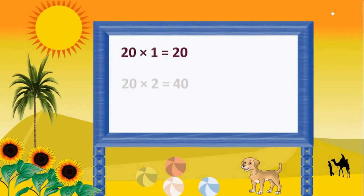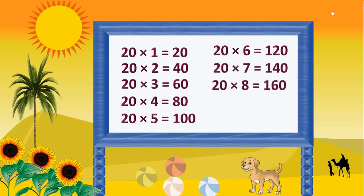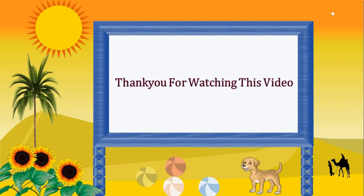20 times 1 is 20. 20 times 2 is 40. 20 times 3 is 60. 20 times 4 is 80. 20 times 5 is 100. 20 times 6 is 120. 20 times 7 is 140. 20 times 8 is 160. 20 times 9 is 180. 20 times 10 is 200. Thank you for watching this video.